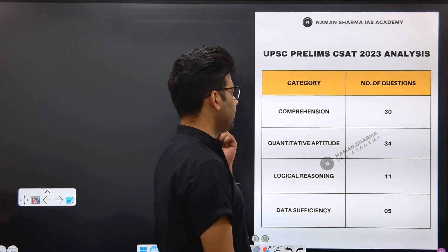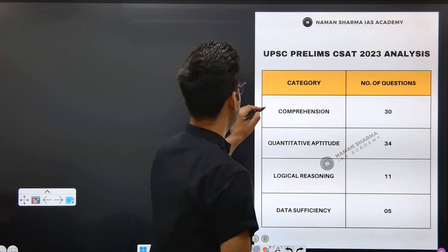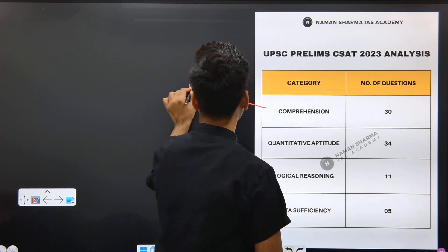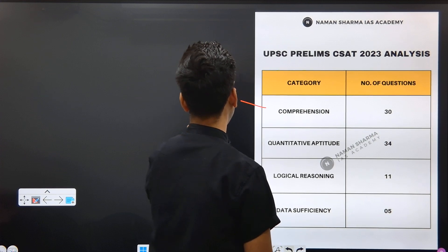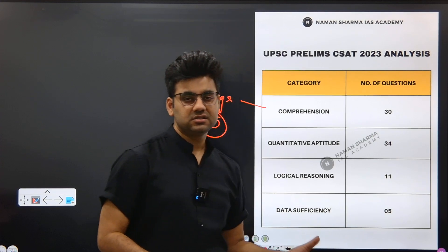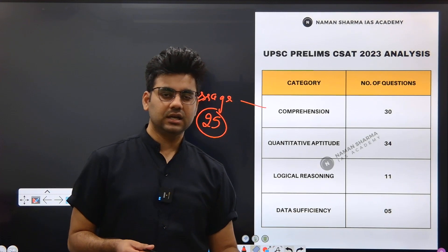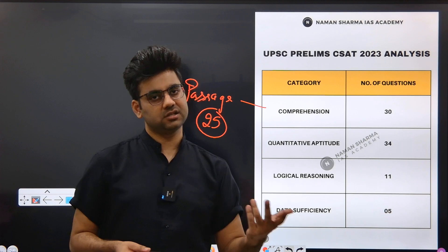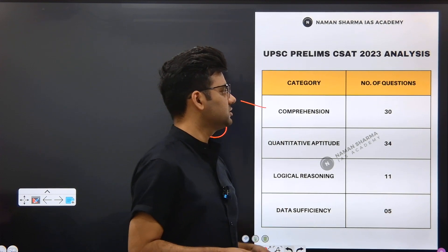We will start with the comprehension part. The total number of questions included in the comprehension were 30 and the passages total were 25. The questions were in pairs. The total number of passages were 25 and the total number of questions were 30.